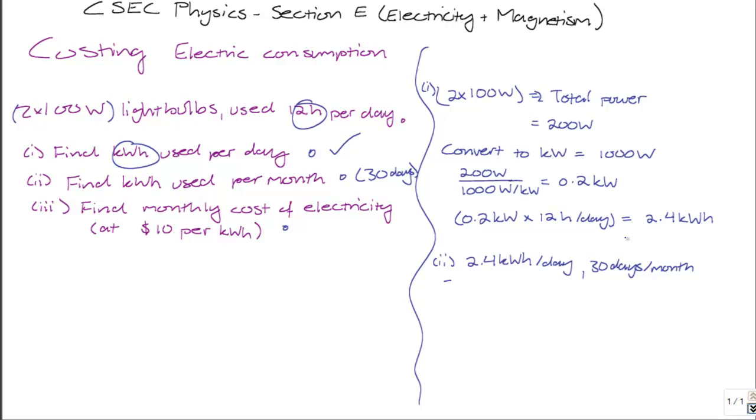E, is equal to 2.4 kilowatt hours per day multiplied by 30 days per month. Days cancel. So we get a value of 72 kilowatt hours per month. This is the energy used by the two bulbs every 30 days.